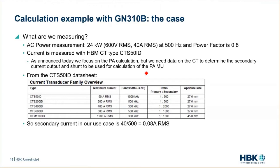The current we are measuring with a CT — an HBM CT type in a 50-amp RMS range. We focus on the power analyzer calculation only, but we need the CT data sheet to determine the secondary current output. From the data sheet snippet, we can see the ratio is 1 to 500, so if we put 40 amps into the CT, the secondary side will output 0.08 amps RMS.